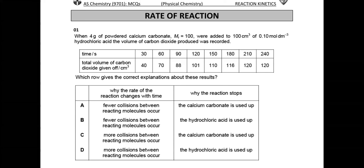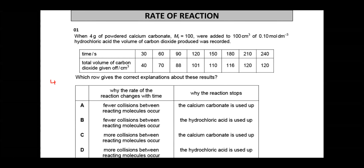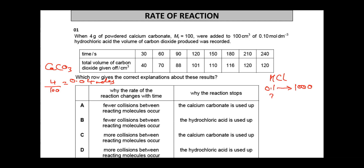We have 4 grams of calcium carbonate, so moles = 4/100 = 0.04 moles. For HCl: concentration is 0.1 mol/dm³, so moles in 100 cm³ = (100/1000) × 0.1 = 0.01 moles. Based on these calculations, HCl is the limiting reagent, not calcium carbonate.